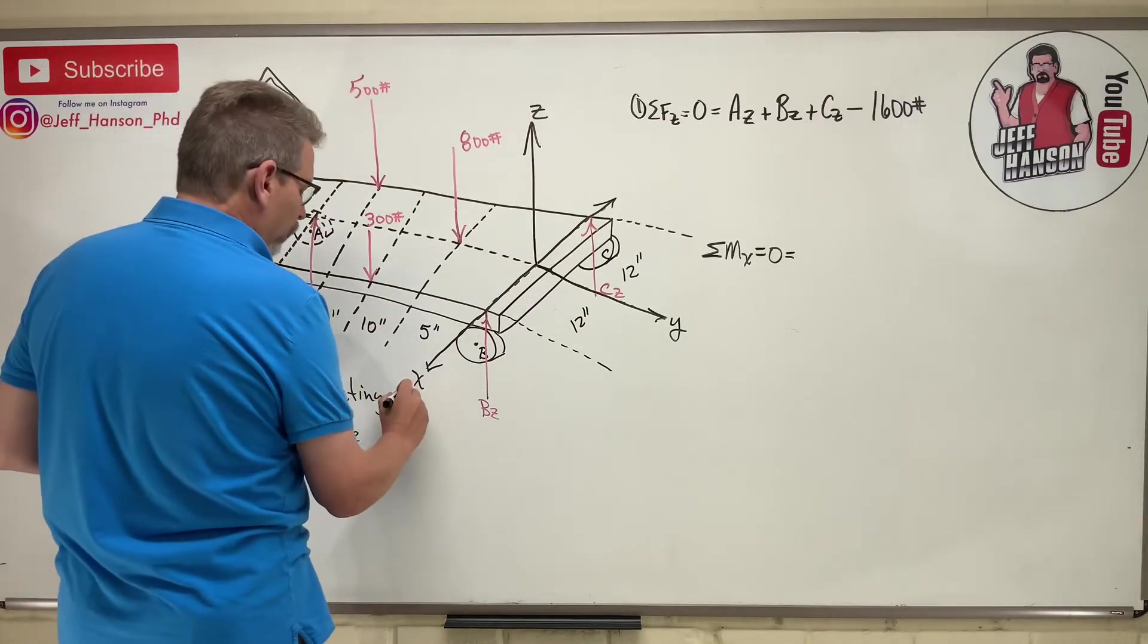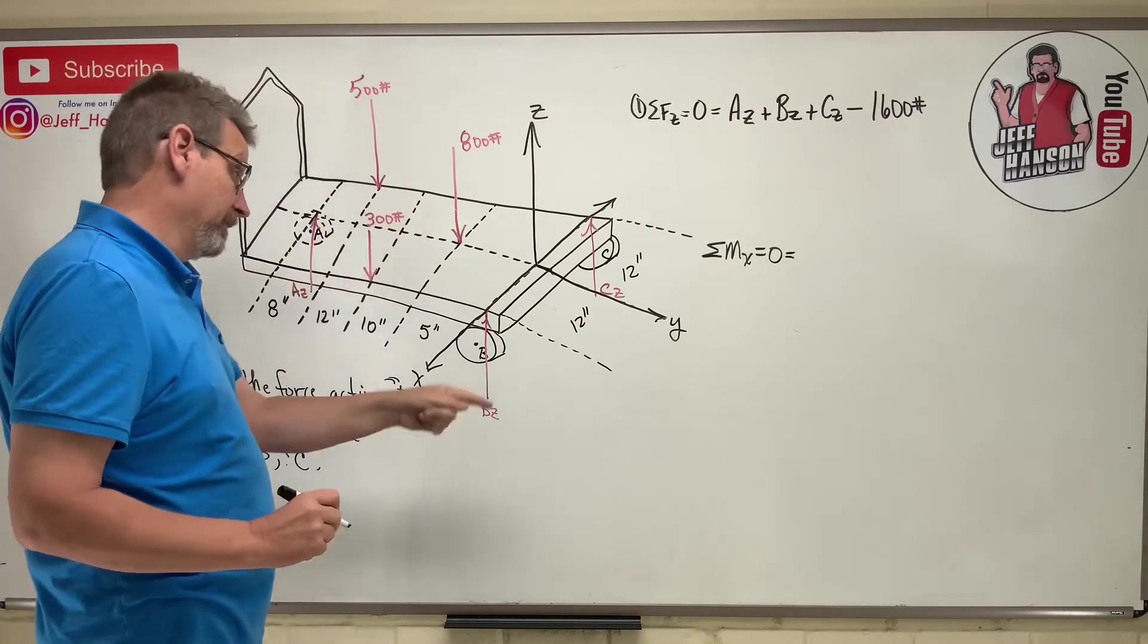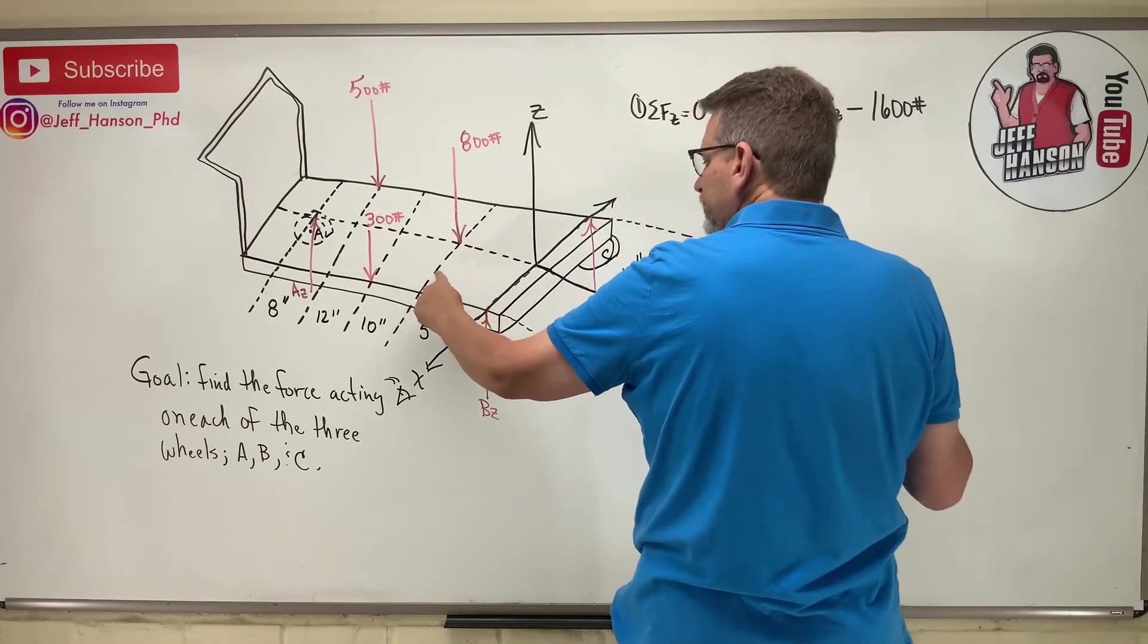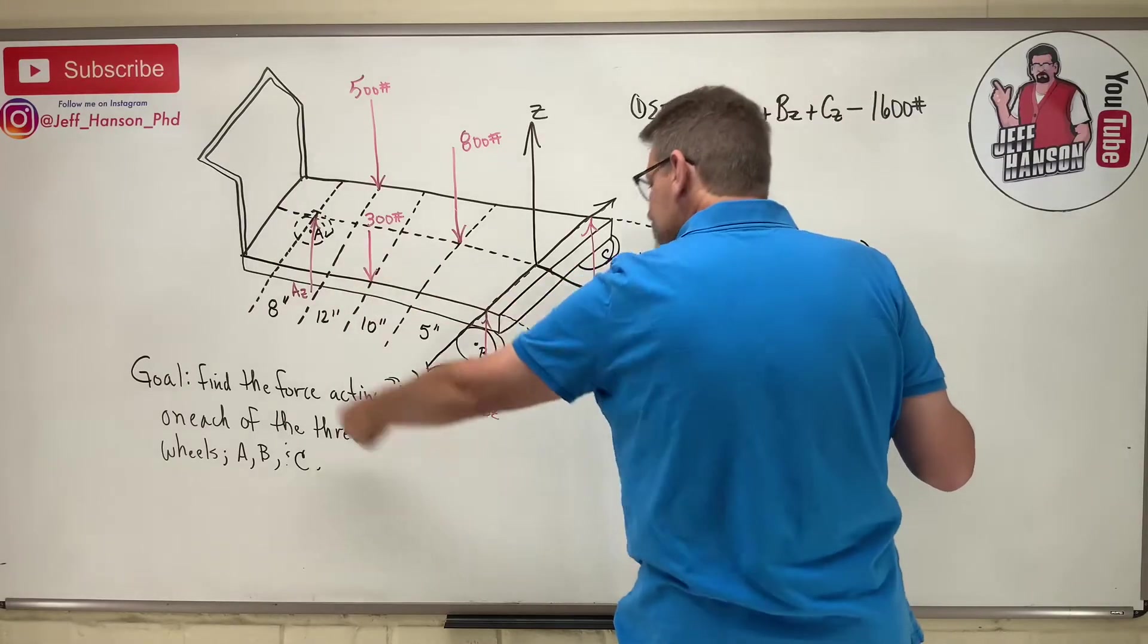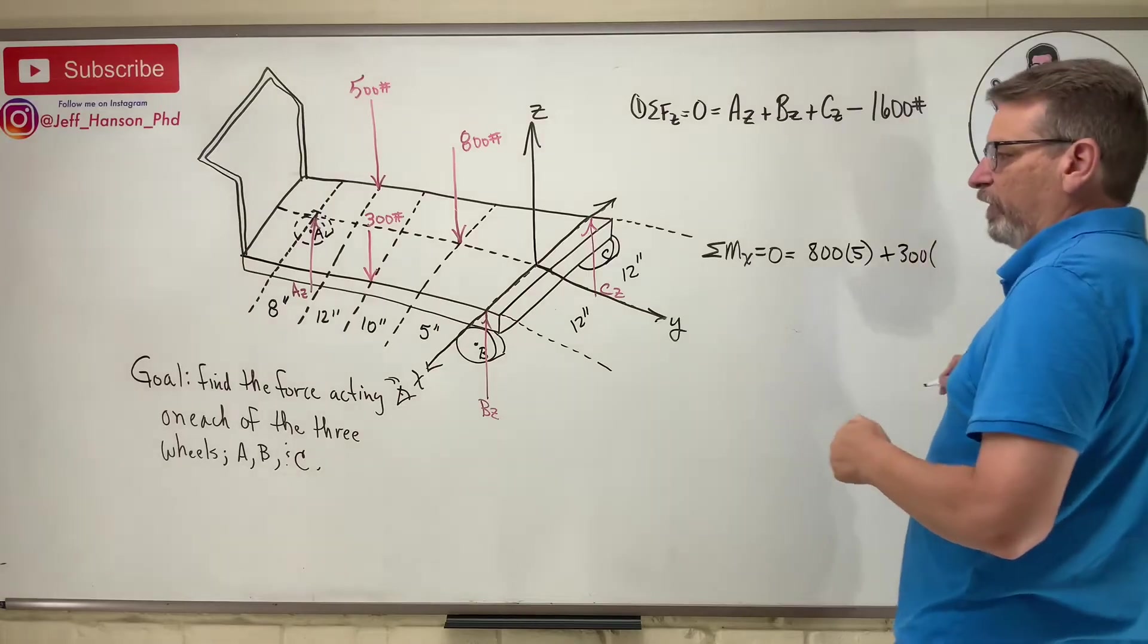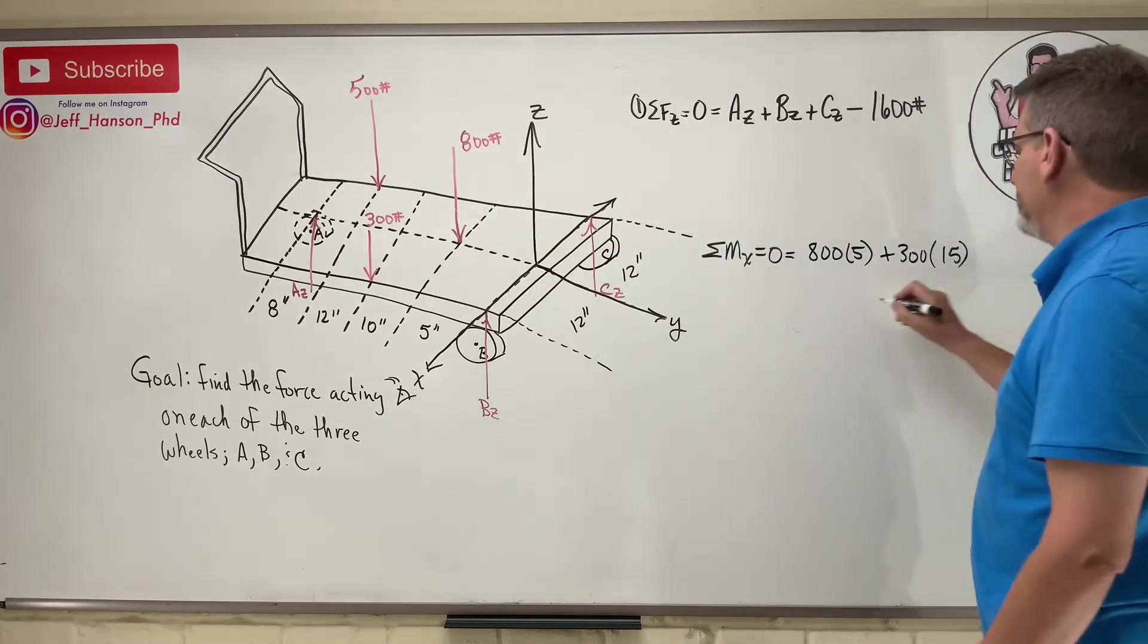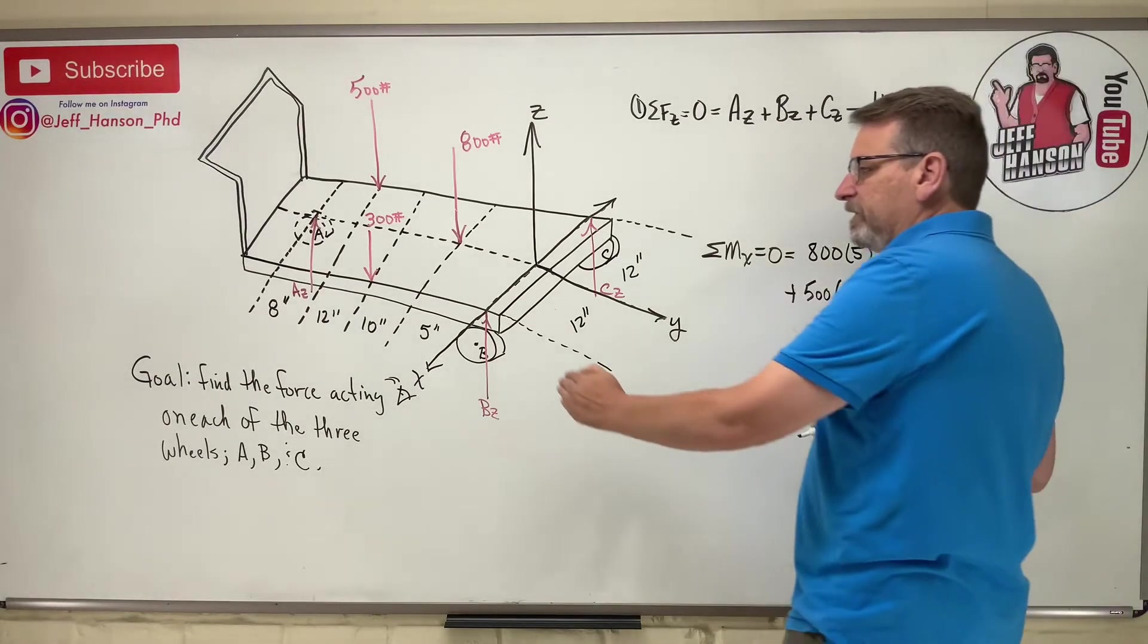So what do we got? Here's our eyeball looking down towards the origin. The 800 would rotate us which way? Counterclockwise, right? So let's make him positive. So 800, I'm so far away from the x, 5 inches. The 300 rotates the same way, so plus 300 times how far away? 5 plus 10 is 15.